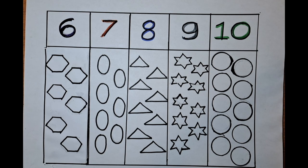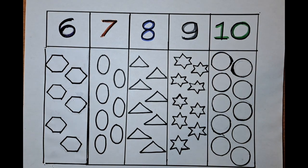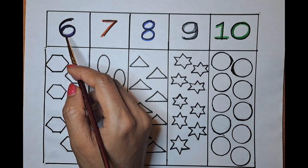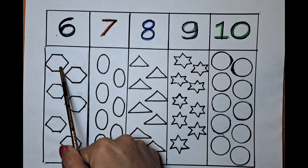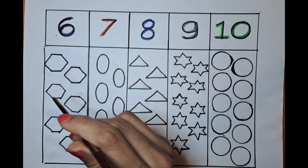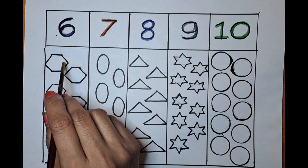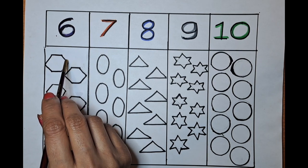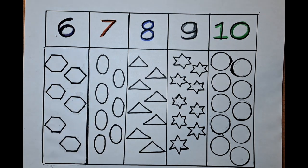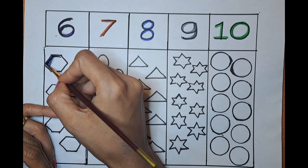What is this number? It's six. Can we color this six with the dark blue color? It's six. What is this shape? It's a hexagon. A hexagon has six sides: one, two, three, four, five, six. Let's color it with dark blue.